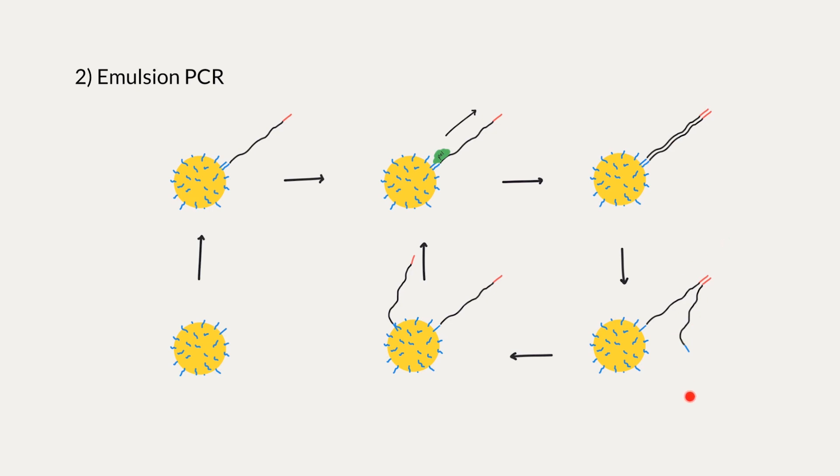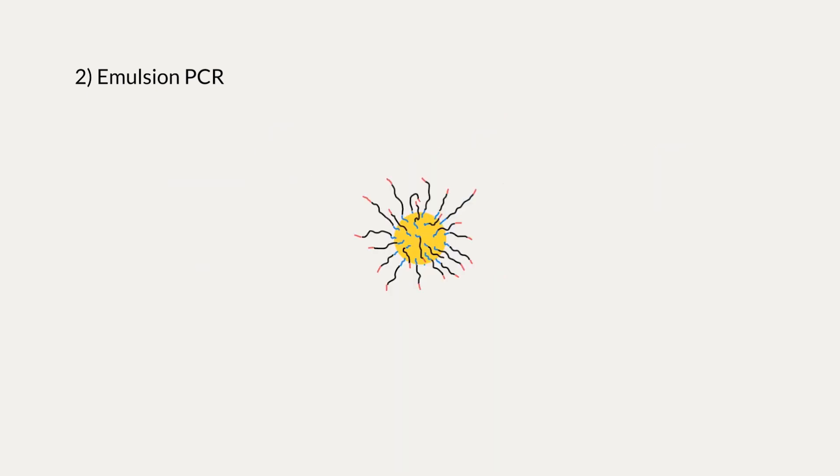Then, the original strand denatures, but the strand which was just created is connected to the bead by the sugar-phosphate backbone, so it's forced to stick around. The strand which dissociates will float away and anneal onto another oligo on the same bead, and the cycle repeats itself 30 to 60 more times, until we end up with several thousands of the same DNA sequence conjugated to the same bead. And this happens on every bead.